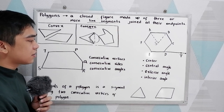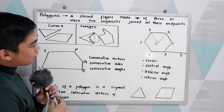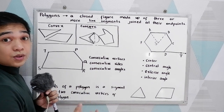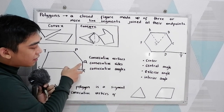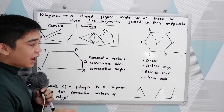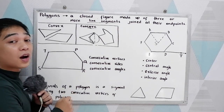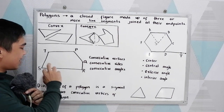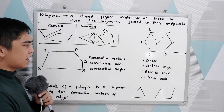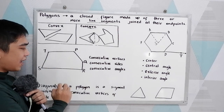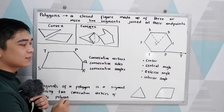Consecutive sides are sides of a polygon that are next to each other. For example, PQ and TP are consecutive sides. ST and TP are consecutive sides. TP and SR are not consecutive sides.